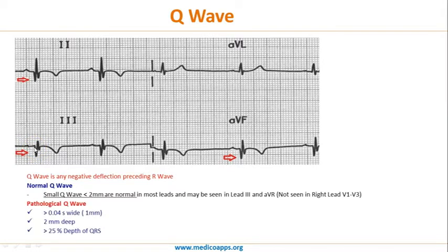A pathological Q wave is defined by any one of three criteria: it is more than 1 mm in width (greater than 0.04 seconds); it is more than 2 mm deep; or the depth of the Q wave is greater than 25% of the QRS complex. These three criteria define a pathological Q wave.